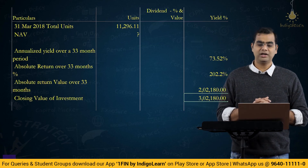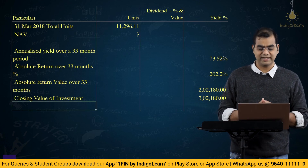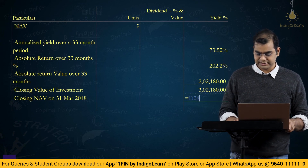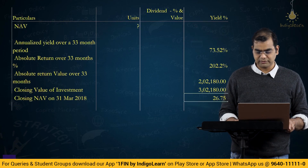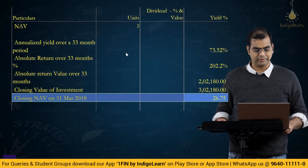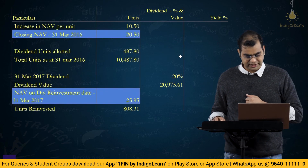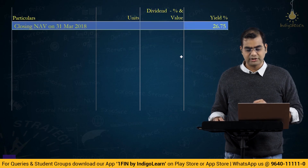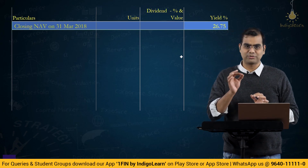Closing NAV on 31st March 2018 = 3,02,180 ÷ 11,296.11 = 26.75. So the answers are: NAV on 31st March 2016 = 20.5, NAV on 31st March 2017 = 25.95, and NAV on 31st March 2018 = 26.75. That concludes this particular problem.